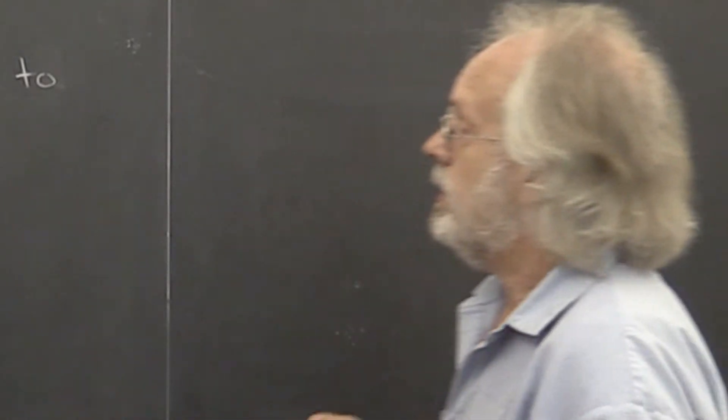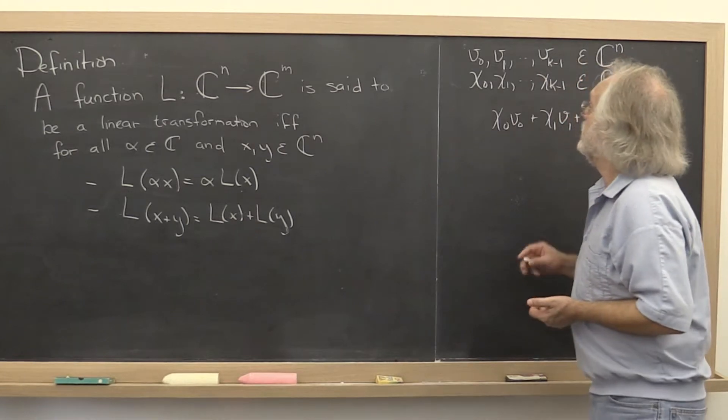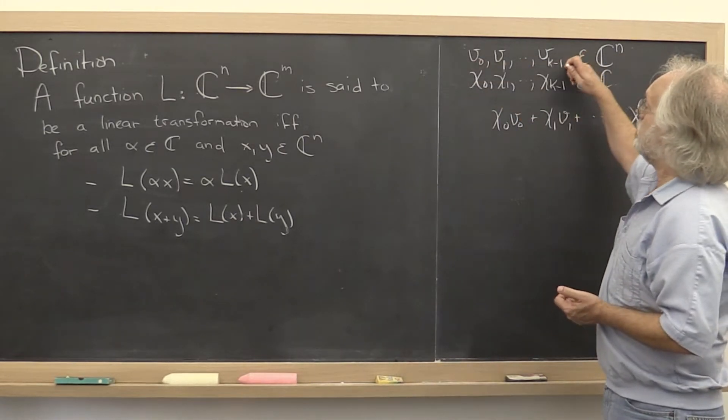Let me show you that link. How does it work? What are linear combinations of vectors? If we're given a bunch of vectors, k of them, v0 through vk minus 1,